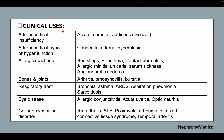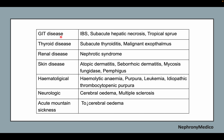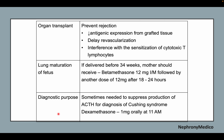Clinical uses include adrenocortical insufficiency, adrenocortical hypo- or hyperfunction, allergic reactions, diseases of bones and joints, respiratory tract, eye diseases, and collagen vascular disorders. They are also used for GIT diseases, thyroid diseases, skin diseases, hematological and neurologic conditions, acute mountain sickness, organ transplantation, fetal lung maturation, and for diagnostic purposes.